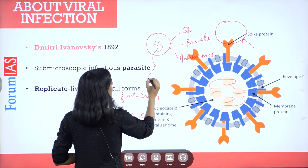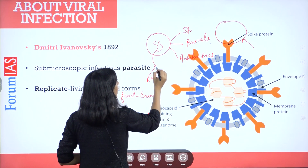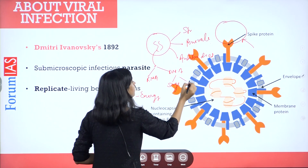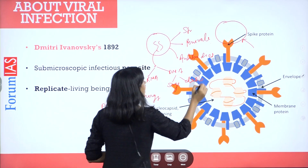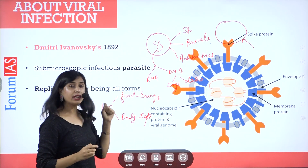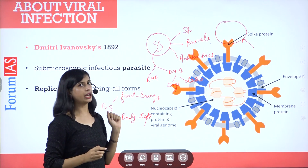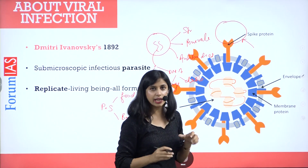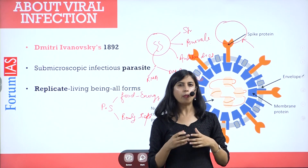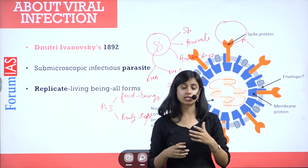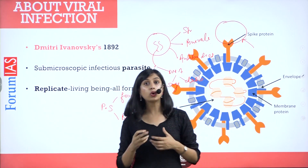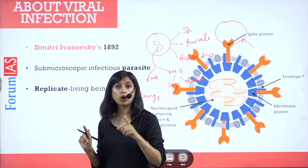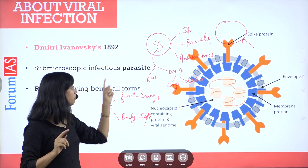Genetic material in a virus can be in two forms: RNA or DNA. In DNA, there can be single helical and double helical structures. RNA viruses include examples like Nipah, COVID, etc. But there are DNA viruses also — for example, adenovirus, which is responsible for common cold, is actually a DNA virus. So two types of genetic materials are possible in a virus.